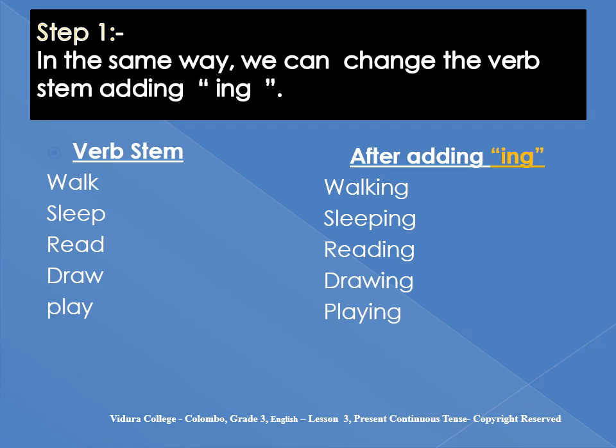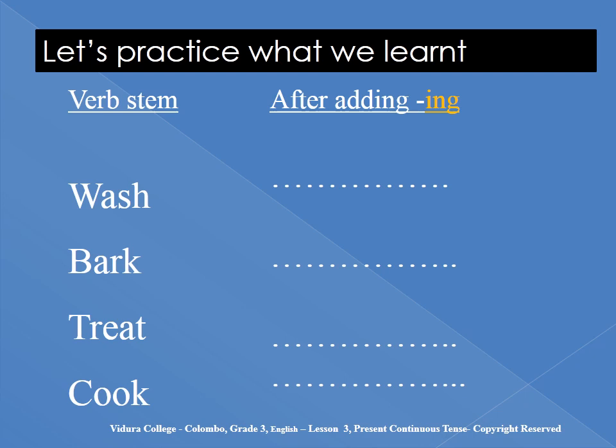You see — after adding -ing. Right, now you can do this. Let's practice what we learned. I have given verb stems — you can write them after adding -ing: wash, bark, treat, cook.